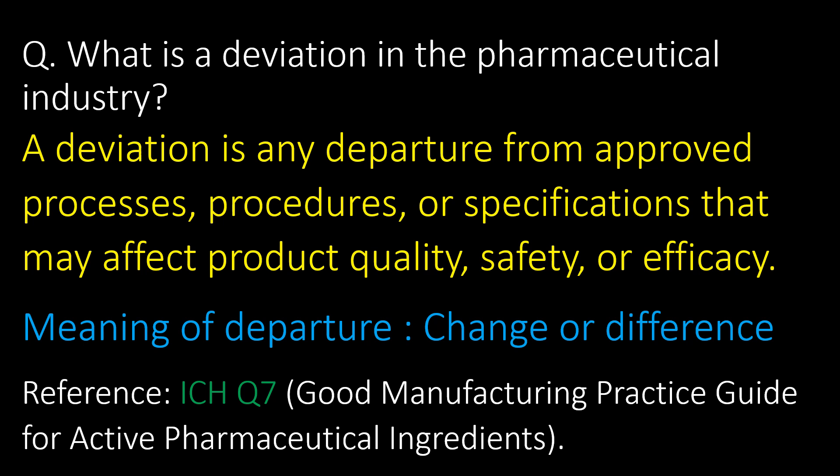Welcome. We will start with some basic questions and then go into detail. First question: what is a deviation in the pharmaceutical industry? A deviation is any departure from approved processes, procedures, or specifications that may affect product quality, safety, or efficacy.